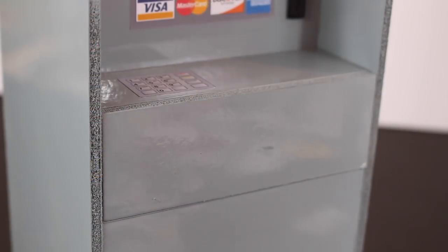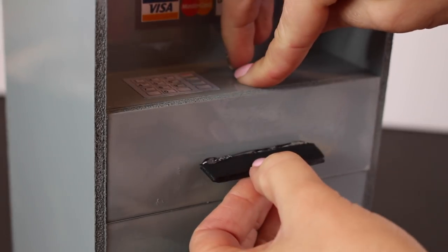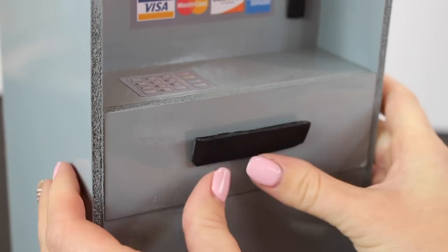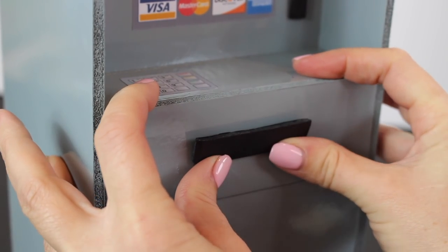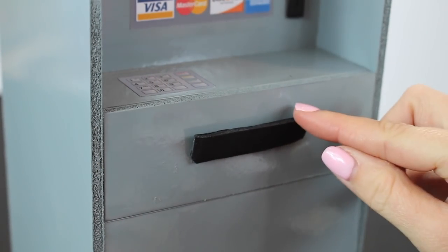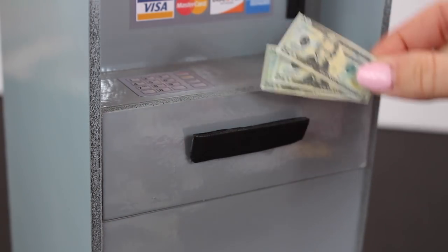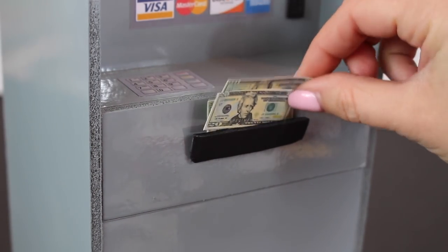And then for the money slot, we also took a scrap piece of foam board, put glue on the very bottom, and then attached it from the bottom and held it up so it's kind of at a slant. That way it's not completely flush with the front of the ATM. That way there's a little gap in between, and the money can sit right in it.